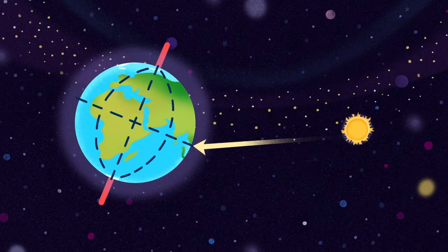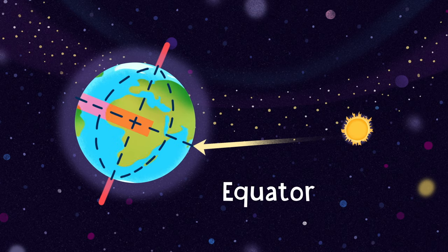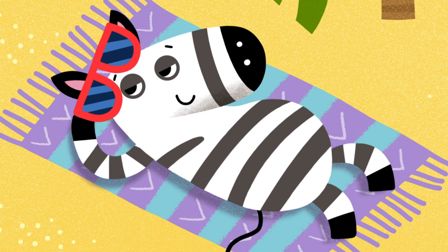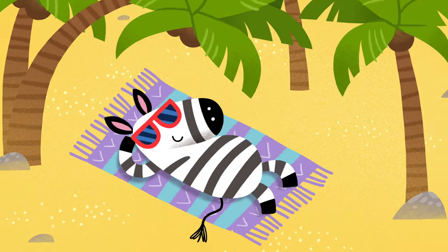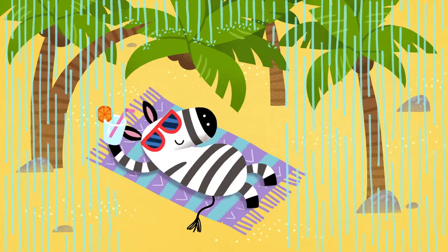At the same time, on the equator, which goes around the middle of our planet, it's always summer. This part of the Earth is well warmed by the sun, and the times of year only differ in the amount of rainfall and the direction of winds.